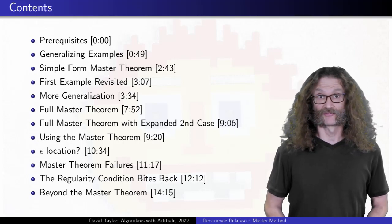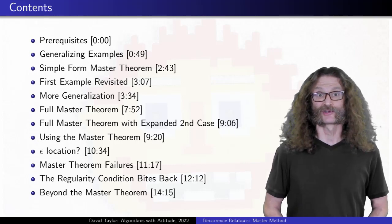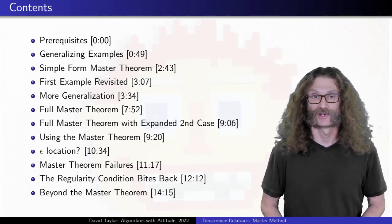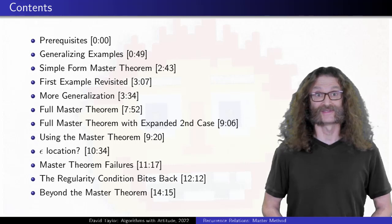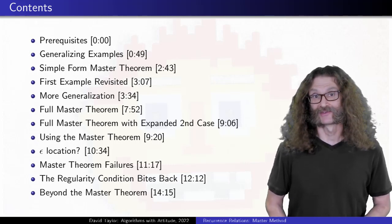Starting with those three examples, I'll generalize them and get a simple form of the master theorem. We'll see the full version of the theorem from the Korman text, and then see how easy it is to re-establish the results from that last video. I finish with some examples where it doesn't apply, and then mention an even more advanced theorem.